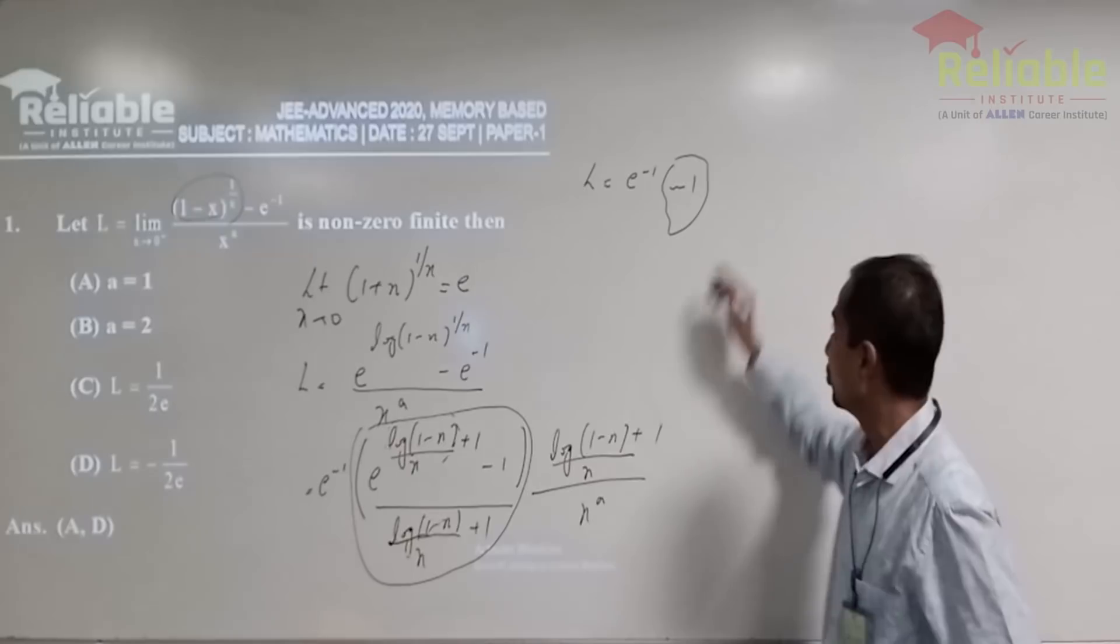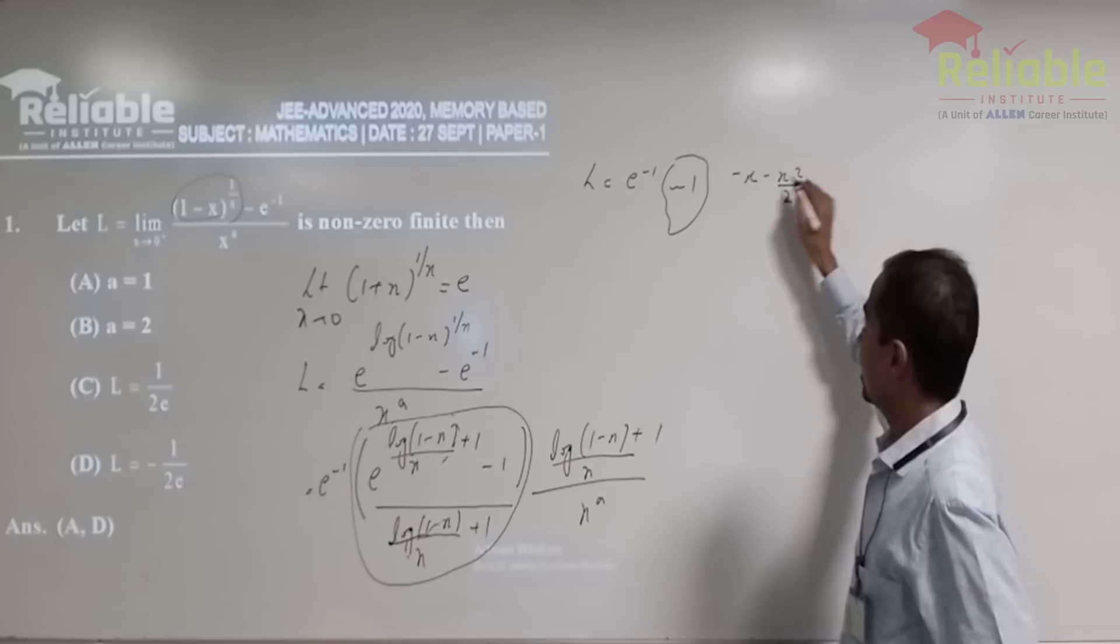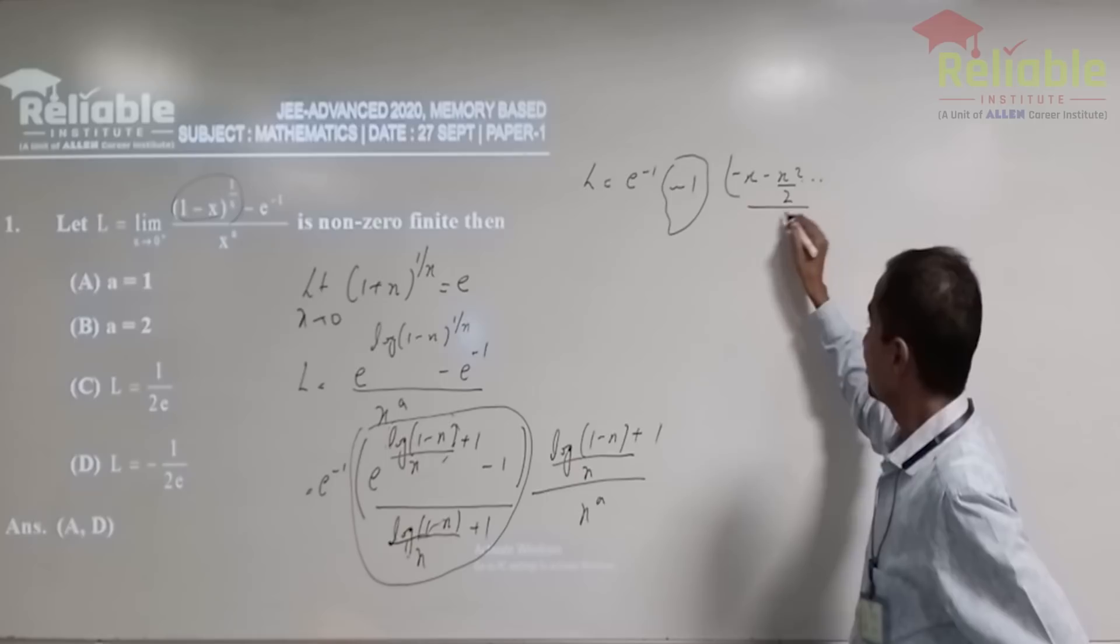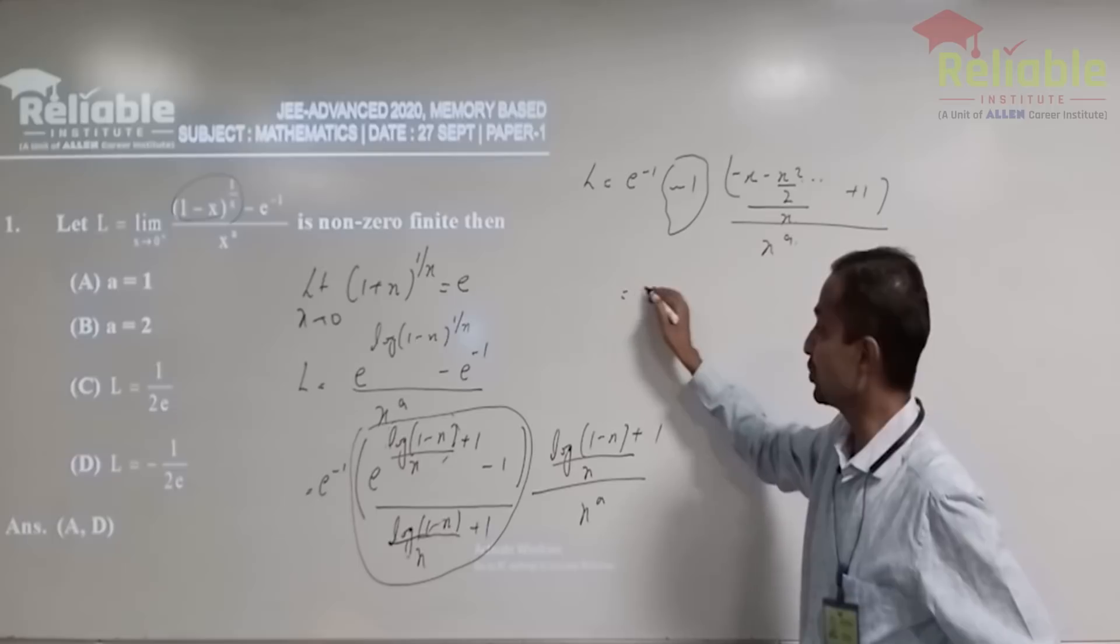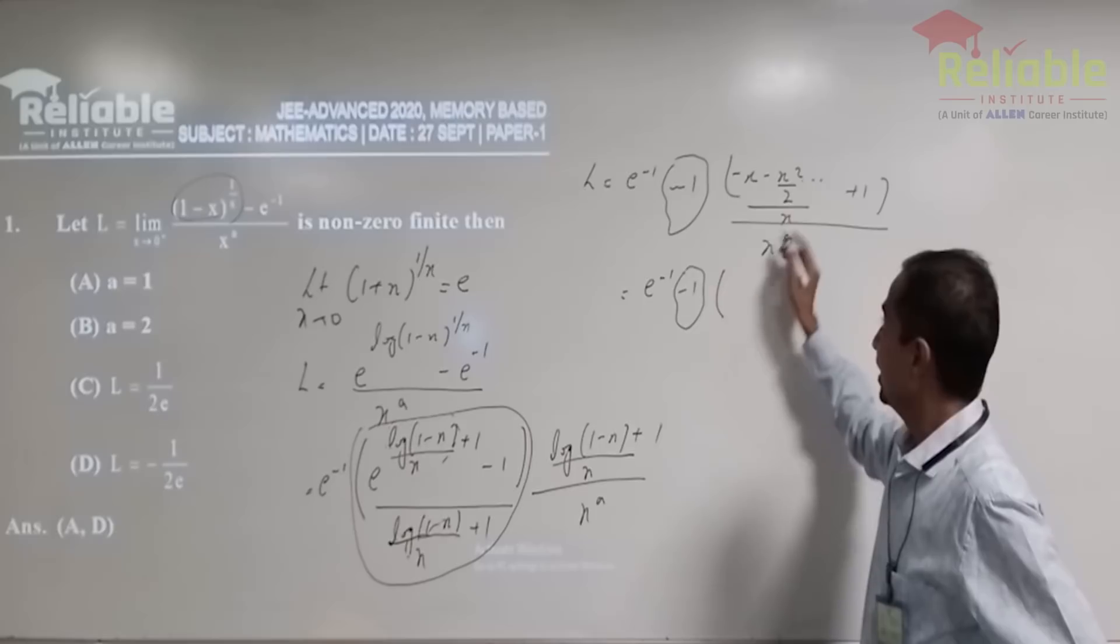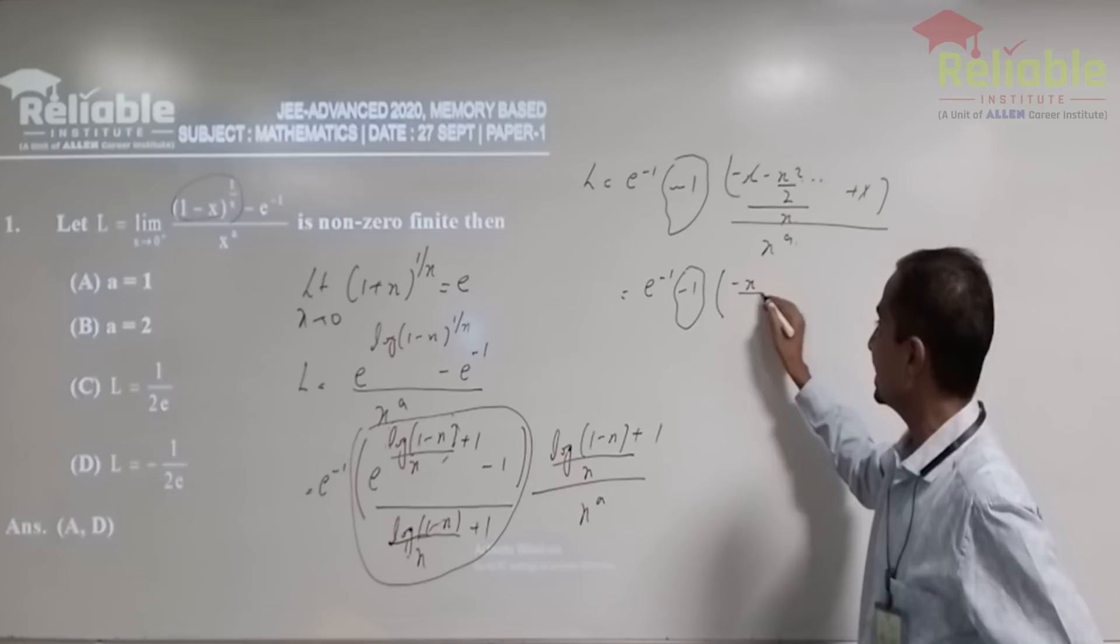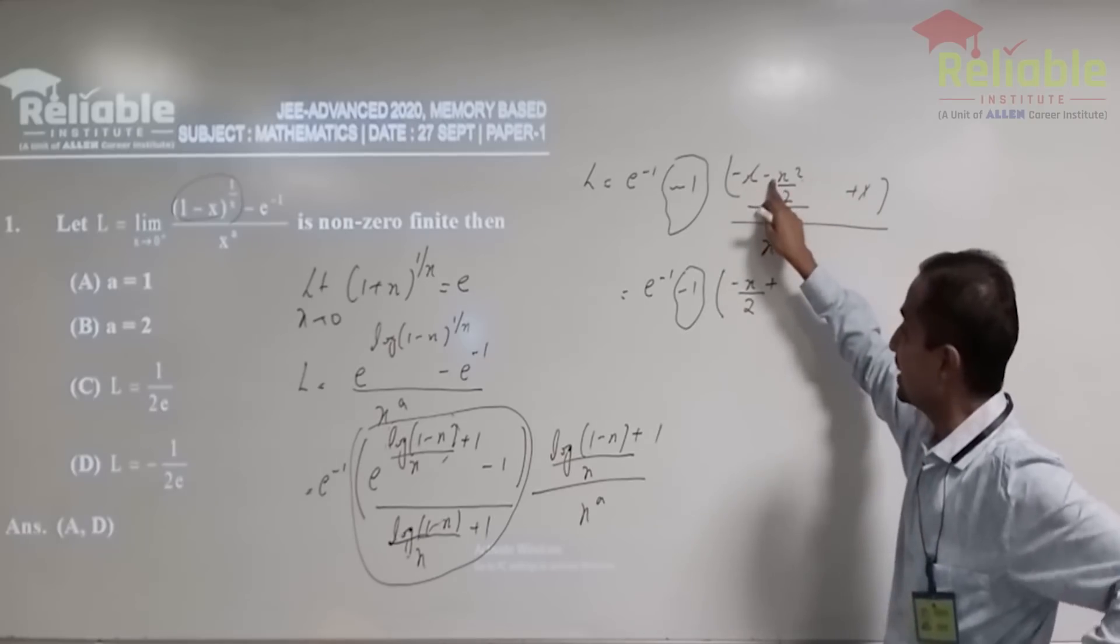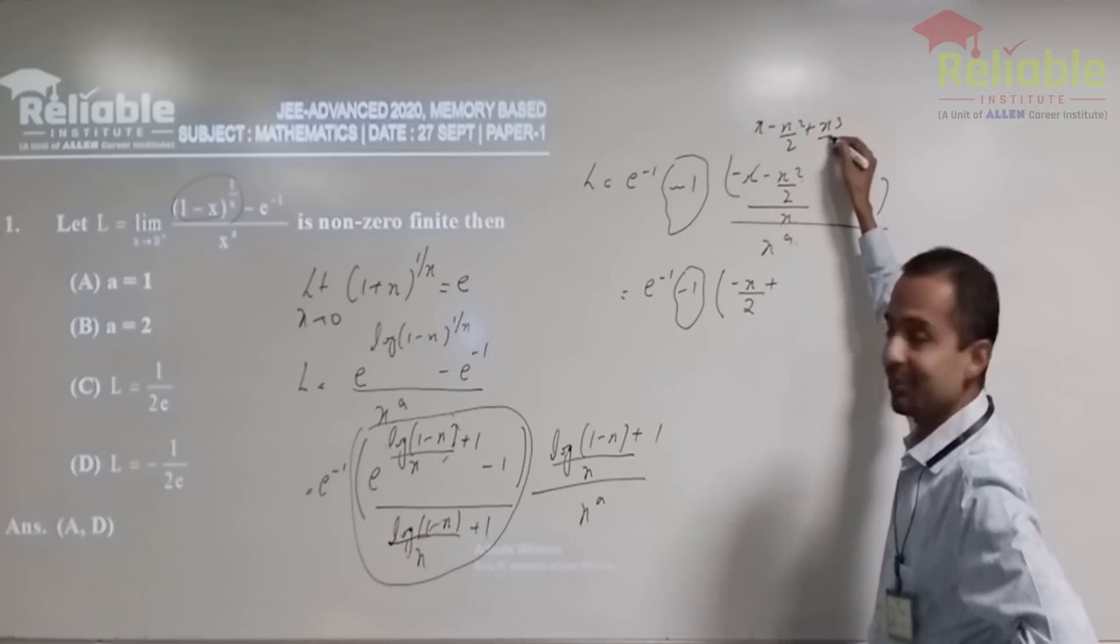So this is x minus x square by 2, right? Then by x plus 1 divided by x to the power a. So this is e to the power minus 1, again, this one is tending to minus 1, this gets offset with this one. So essentially, we are left with minus x by 2 plus here x minus x square by 2 plus x cube by 3, right?